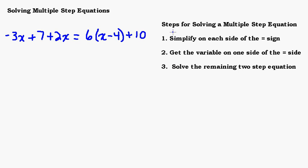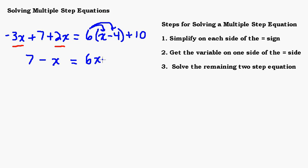Step one: simplify on each side of the equal sign. On the left hand side, combining x terms: negative 3 plus 2 is negative 1x, which I'll write as negative x. There is a 1 there, but it's not necessary to write it. On the right hand side, I distribute the 6, giving 6x minus 24 plus 10. Combining those constants gives 6x minus 14.